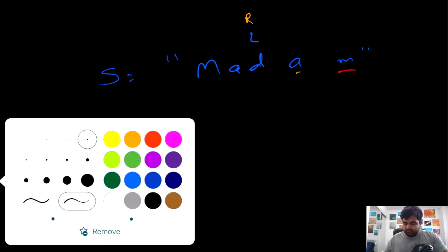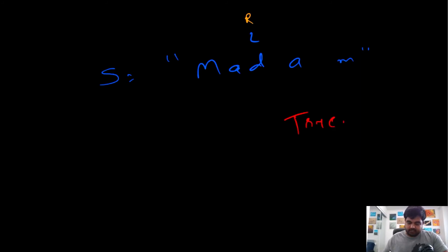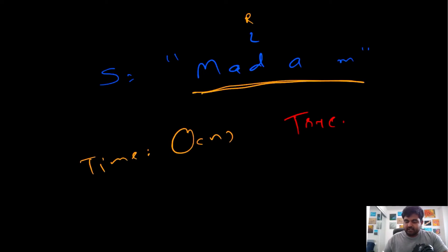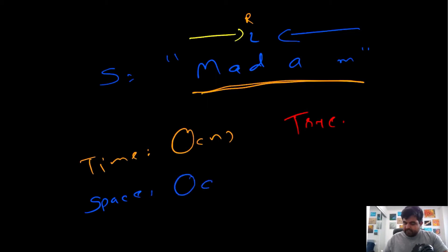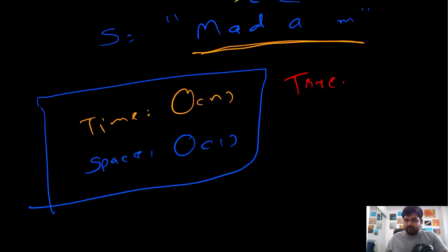We don't need to iterate further because our algorithm specifies we stop before right crosses left. Doing one more iteration would have left and right crossing each other, which is the stopping condition. We've confirmed all characters match, so we return true. For time complexity, this is O(n) — everything is done in a single pass with left moving right and right moving left until they meet. For space complexity, we only use a couple of pointers, so it's constant O(1) space. This is the optimal solution. Let's move on to coding.